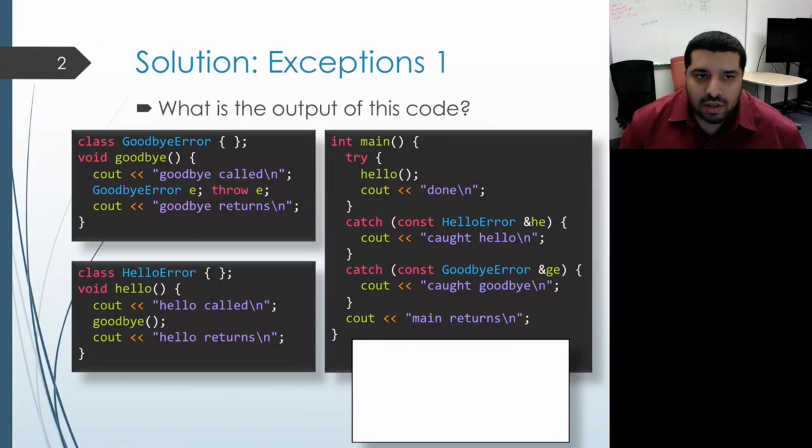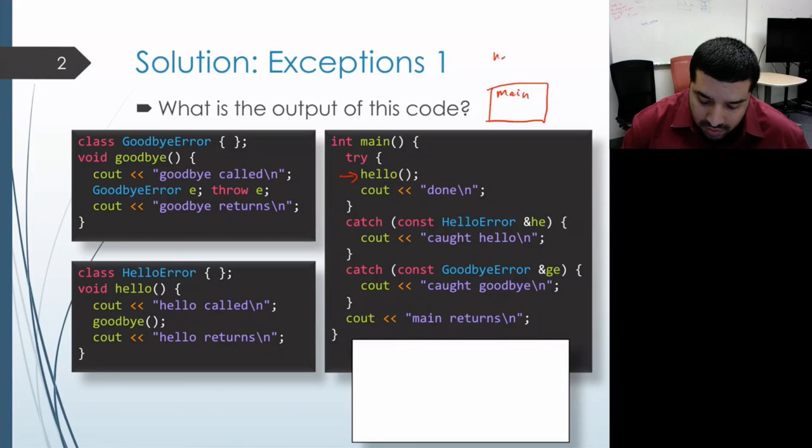This code starts off by calling main, so we get an activation record for main on our call stack. Then the program executes the code in the body of main. It enters the try block and it gets to the call to hello, which creates an activation record for hello.